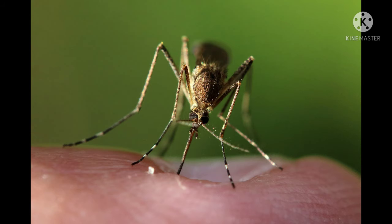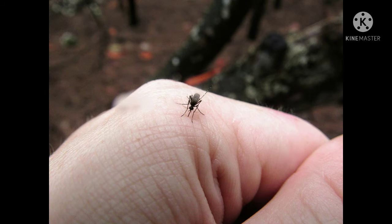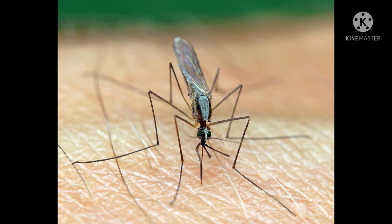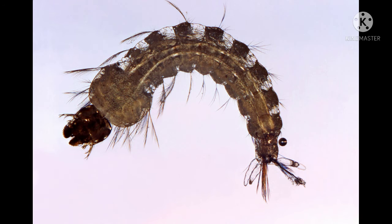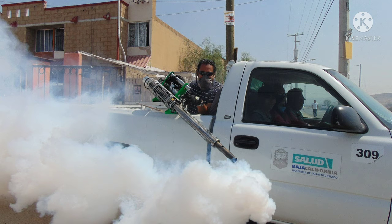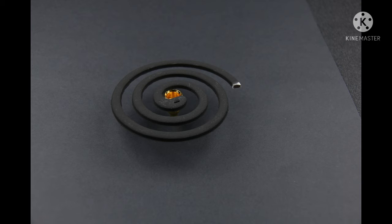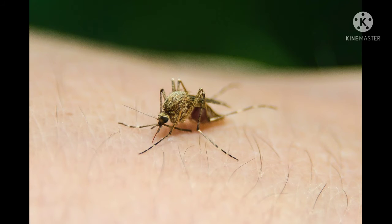The mosquito's saliva is transferred to the host during the bite and can cause an itchy rash. In addition, many species can ingest pathogens while feeding and transmit them to the host. In this way, mosquitoes are important vectors of diseases such as malaria, yellow fever, chikungunya, West Nile, dengue fever, filariasis, Zika, and other arboviruses. By transmitting diseases, mosquitoes cause the deaths of more people than any other animal — over 700,000 each year.